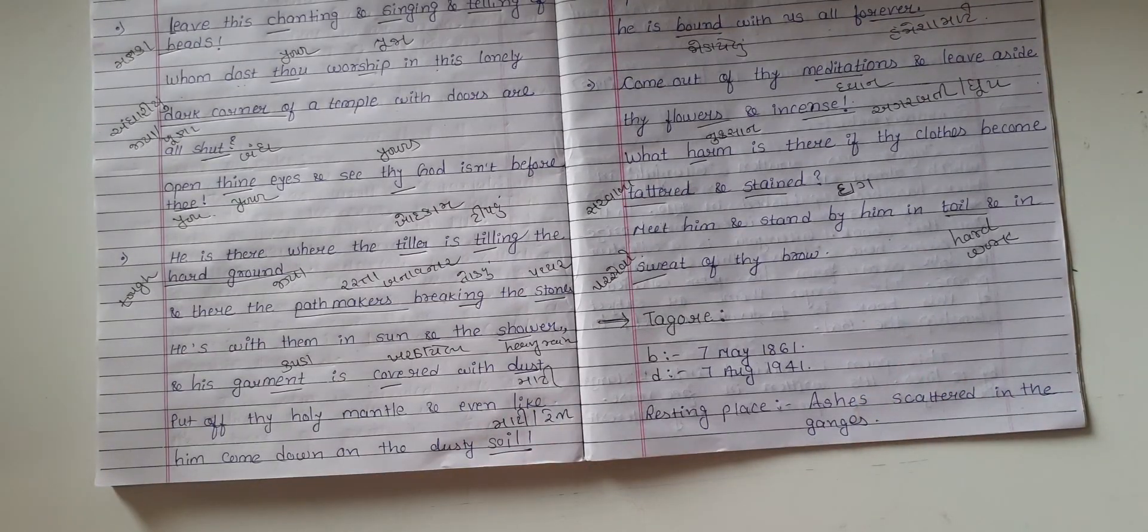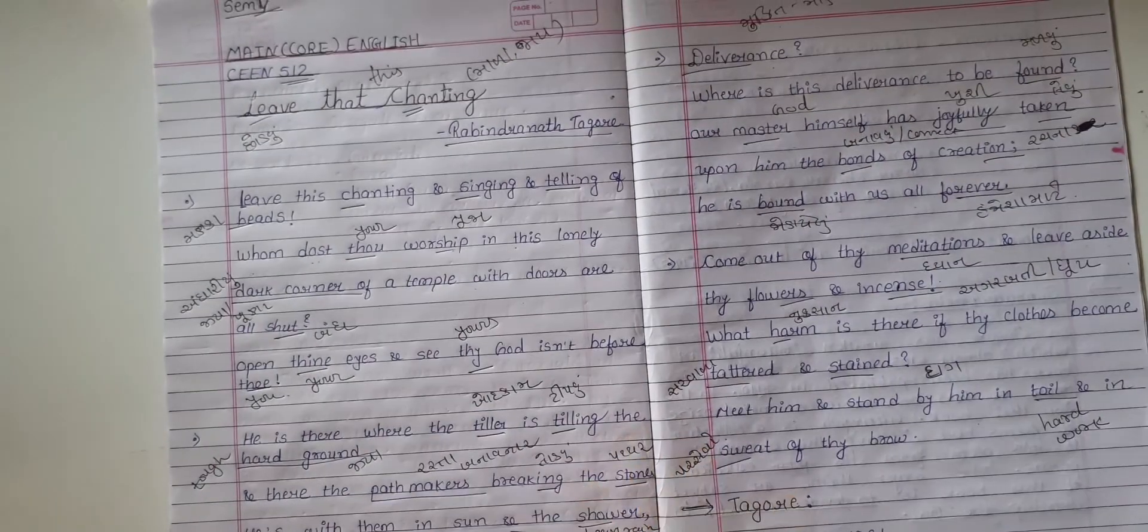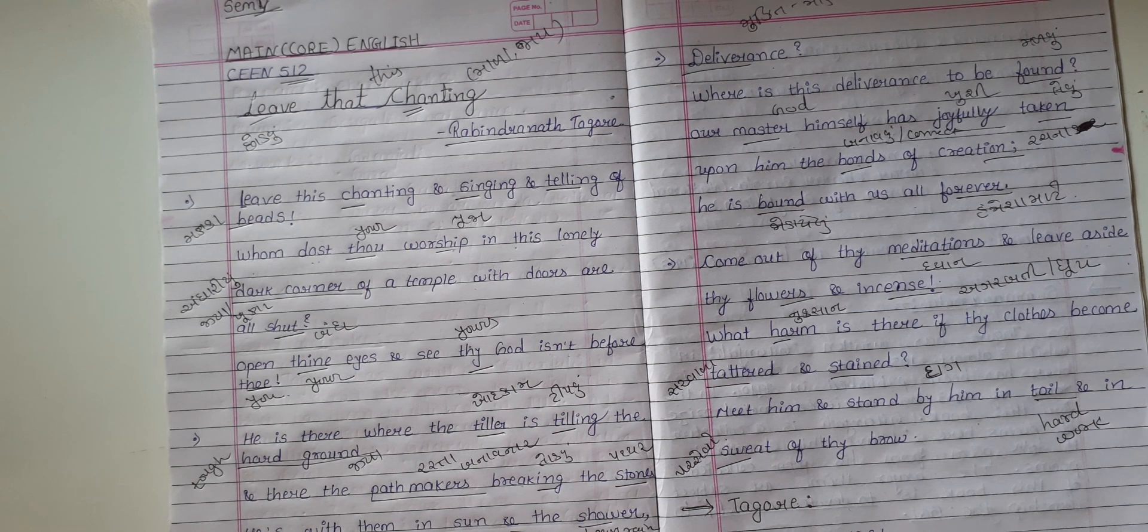So in short, the traditional puja that we do, at that time many people believe that through this worship, through these rituals, you will get mukti or salvation. But Tagore is trying to break this tradition, this parampara of puja, through this poem.